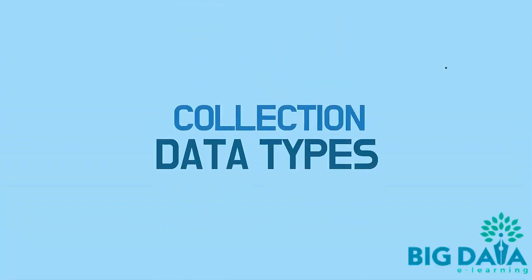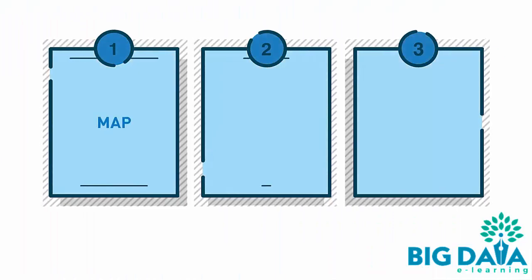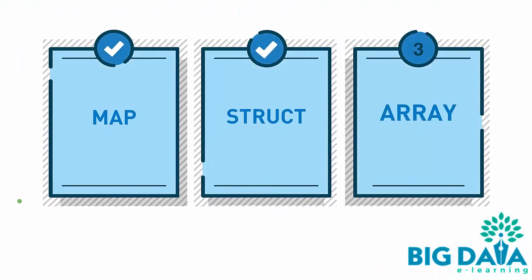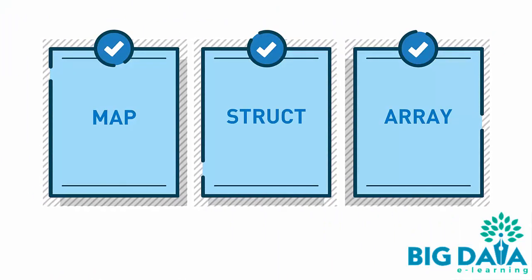Timestamp: stores timestamp with nanosecond precision — the example is highlighted. Collection Data Types. Map, struct, and array are three of the collection data types available.